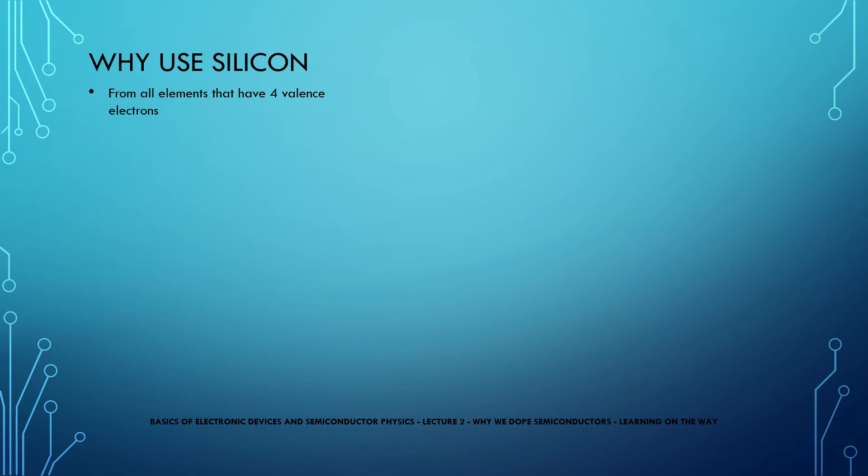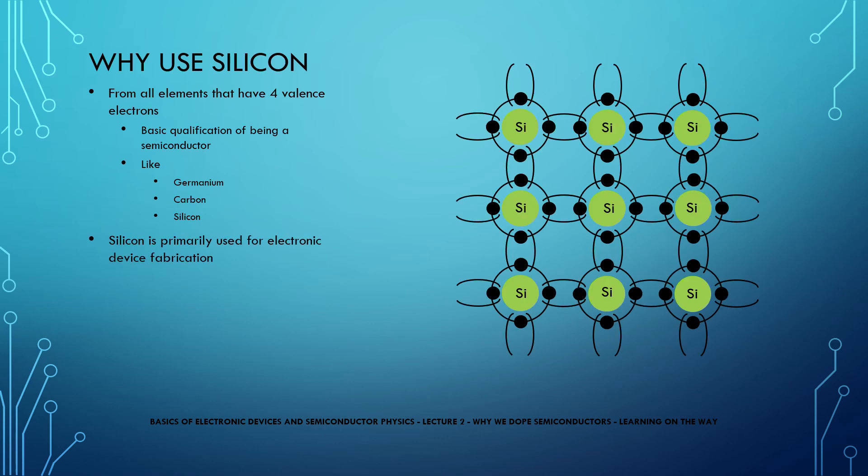From all the elements that have 4 valence electrons which is the basic qualification of semiconductors like germanium, carbon and silicon, we primarily use silicon for electronic device fabrication.